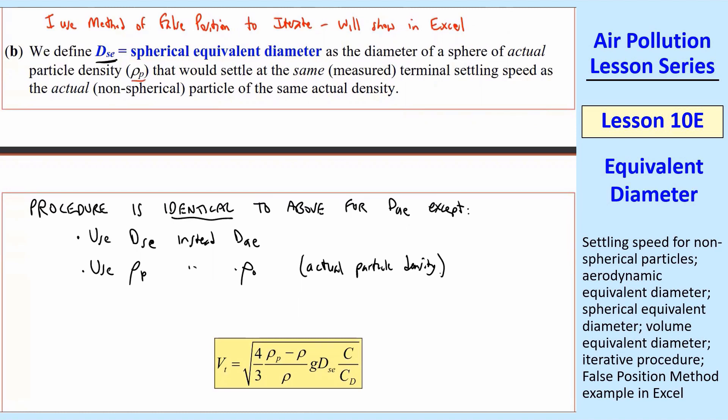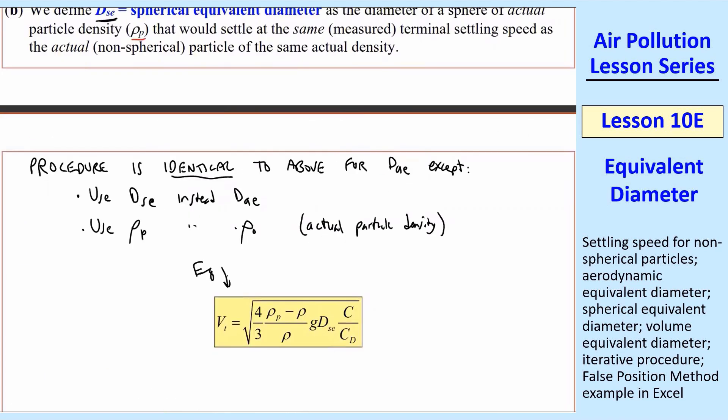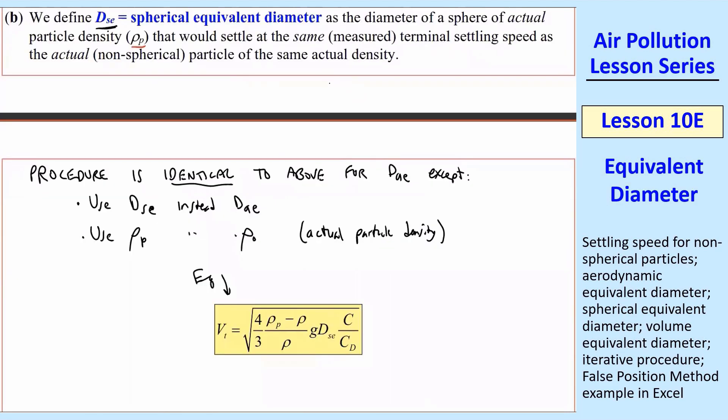Just a little comment about why we might do this. The spherical equivalent diameter is appropriate when you have cyclones and things like that that depend very much on the density of the particle, whereas this aerodynamic equivalent diameter, sometimes there are equations or correlations that are based on water droplets. So then you might want to use this dₐₑ. The equation is here. It's the same as what we had up here, except instead of ρ₀, we now use ρₚ, and we call this dₛₑ.